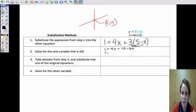Then we'll have 1 equals 4x. And negative 3x is going to just give us 1x plus 15. And then if we minus 15 from both sides,